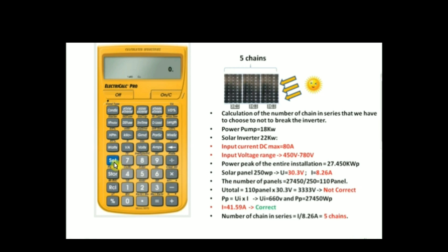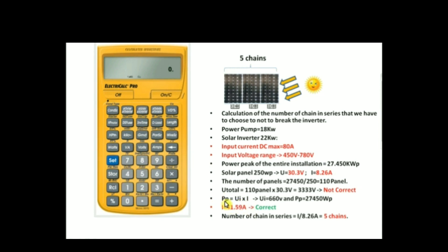First, we clear all to start over from the beginning — click on Set, then Clear All. Now we switch to one-phase mode: click on Set and select 1. As you can see, we are now in one-phase mode and can start the current calculation. We enter the voltage, which is 660 volts.